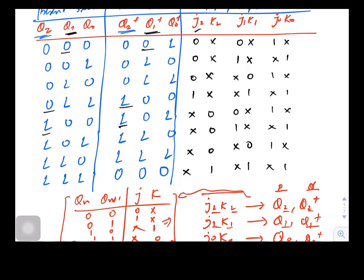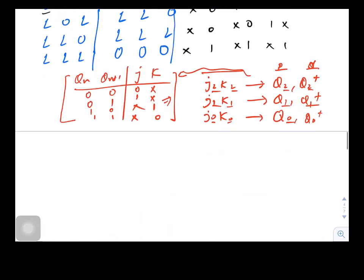Since there are one, two, three, four, five, six inputs over here, therefore we need six K-maps. So let us start with K-maps.